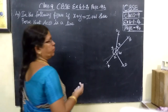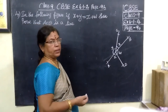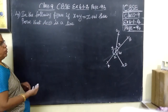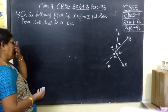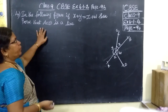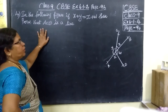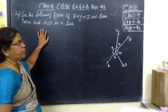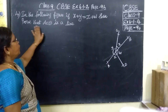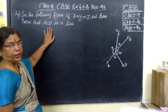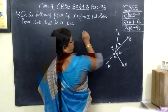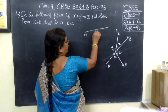Now question number 4, exercise 6.1, question number 4. Here it is given: in the following figure, if X plus Y equals Z plus W, then prove that AOB is a straight line. If you want to prove this is a straight line,